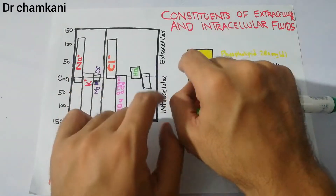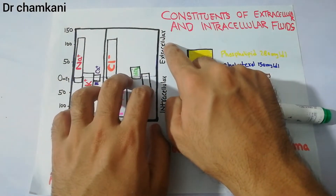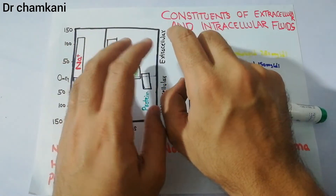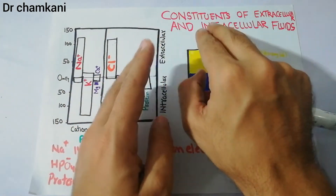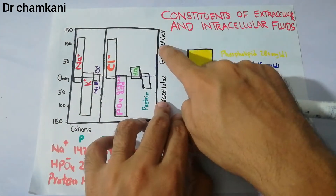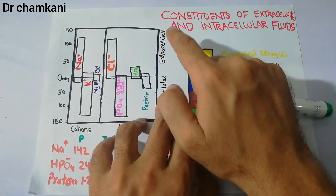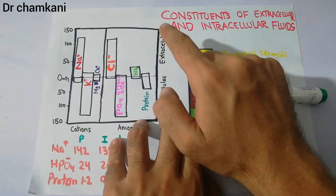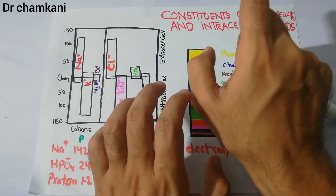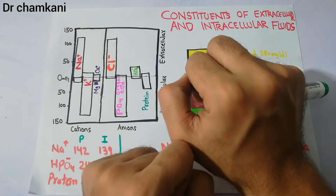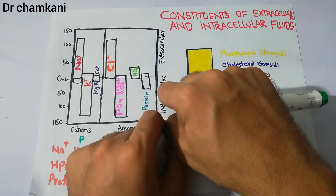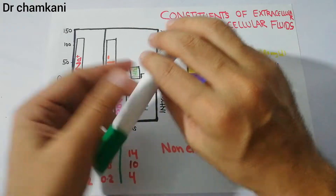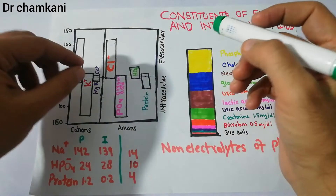The concentration in the extracellular fluid can also differ between the interstitial fluid and the plasma, because the extracellular fluid is composed of both plasma and interstitial fluid, while the intracellular fluid is present inside the cell. Let's now discuss each of these in detail.